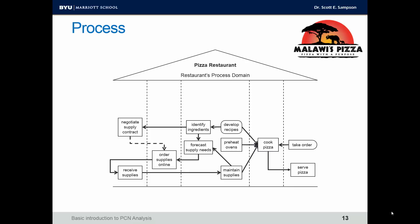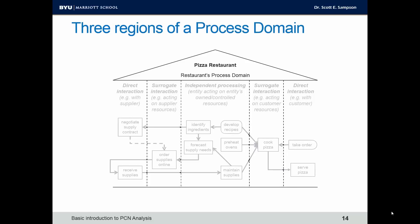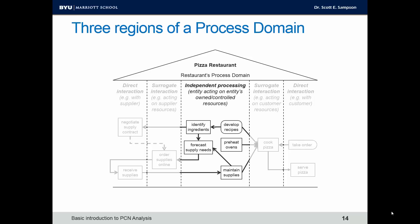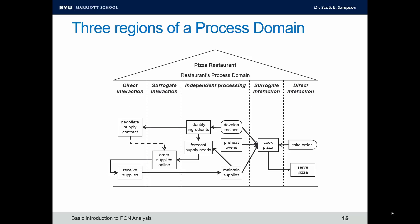This roof shape — the triangle at the top — suggests the degrees of control. We have three regions in the process domain. At the extreme, we have the region of direct interaction: steps that involve interaction with another entity such as a supplier or customer. A little closer in, we have the region of surrogate interaction — interaction not directly person to person, but interacting with a resource of another entity. For example, ordering supplies online means interacting with the supplier's website rather than directly with the supplier, or cooking the pizza based on the customer's order information.